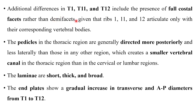The pedicles in the thoracic region are generally directed more posteriorly and less laterally than those in any other region, which creates a smaller vertebral canal in the thoracic region than in the cervical or lumbar regions. The laminae are short, thick, and broad. The end plate shows a gradual increase in the transverse and anteroposterior diameters from T1 to T12.